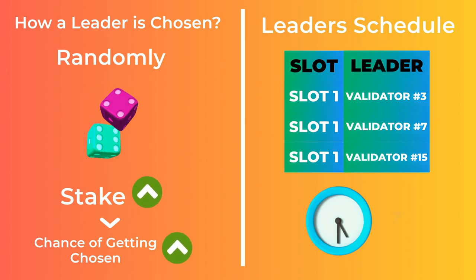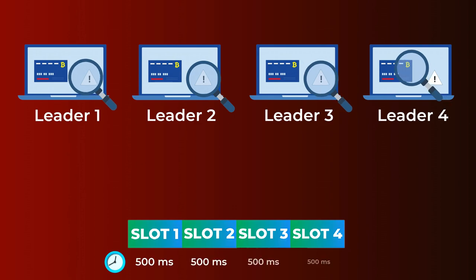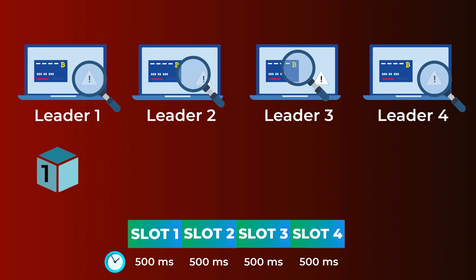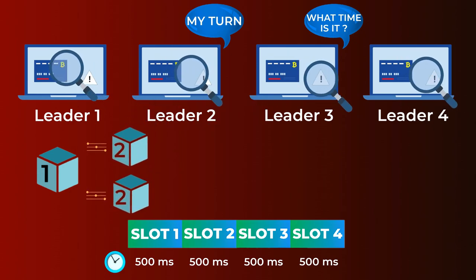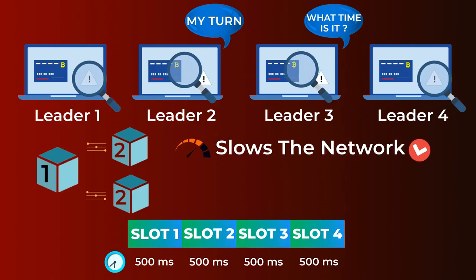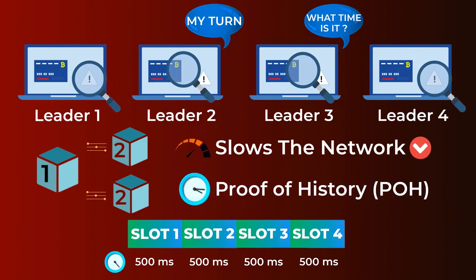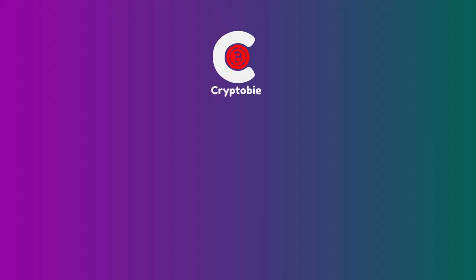The problem here is the differences in time between leaders. For example, let's say that each slot lasts for half a second, so each leader has half a second to verify the transactions and produce a block so the next leader can build on it. But there is no universal clock for these leaders — two leaders may produce two blocks at the same time, and validators have to decide which leader's clock is correct, which takes time and slows down the network.